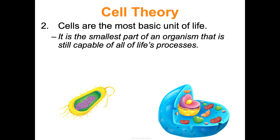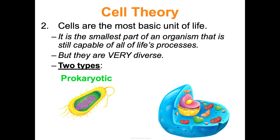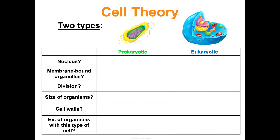Even though cells are the foundation of all living things, structurally and functionally they are very diverse. All cells fall into two categories: prokaryotic or eukaryotic. Organisms made of eukaryotic cells are called eukaryotes; organisms made of prokaryotic cells are prokaryotes. The main identifying difference is the presence of a nucleus. Prokaryotic cells do not have a nucleus; eukaryotic cells — like yours — do have a nucleus.